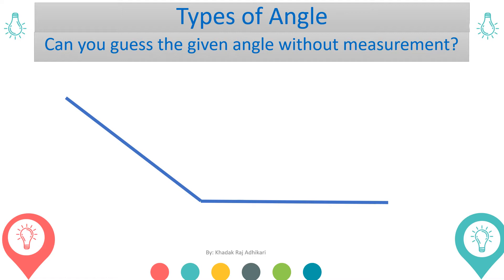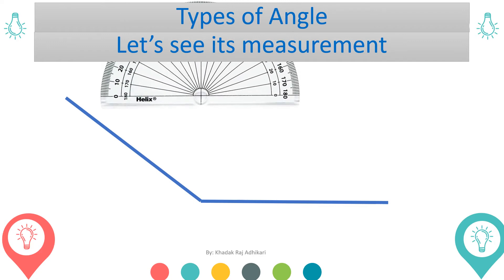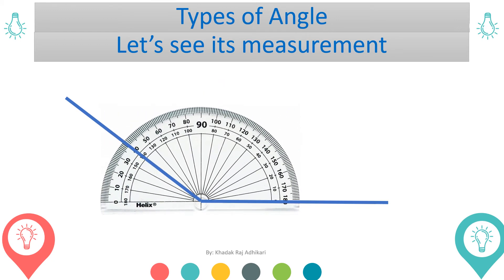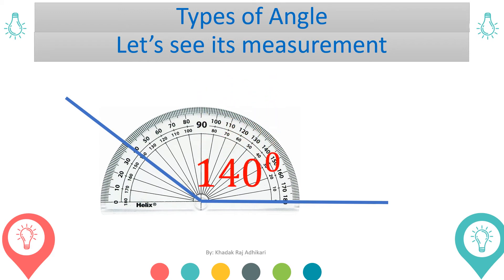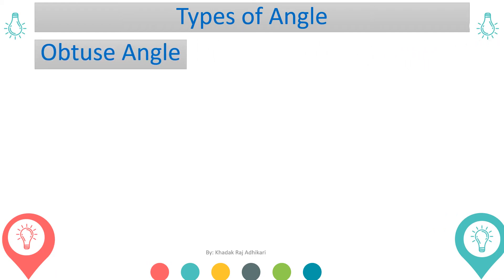Now, can you guess the measurement of this angle? Let's see the measurement by using a protractor. It is exactly 140 degrees. This angle is more than 90 degrees and less than 180 degrees, so this angle is called an obtuse angle.